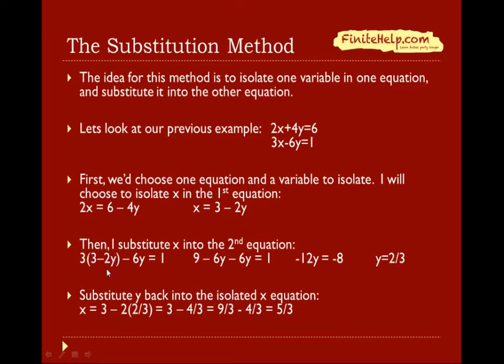Now, I'm going to take this x and substitute that into the second equation. In place of x, we're going to have three minus two y into the second equation. And then, now I just simply solve for y from here, which y comes out to be two-thirds.